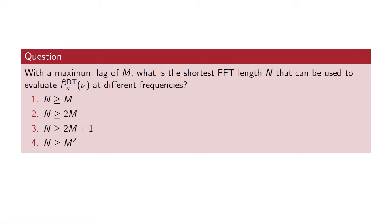If we have a maximum lag of m, what is the shortest FFT length we could use to evaluate this correctly? The correct answer is that the FFT length must be greater than two times the maximum lag plus one. The reason is that if we have plus or minus m as the maximum lag for the autocorrelation which is not multiplied by zero, the size of the non-zero sequence is 2m plus 1, and this is the shortest valid FFT length.